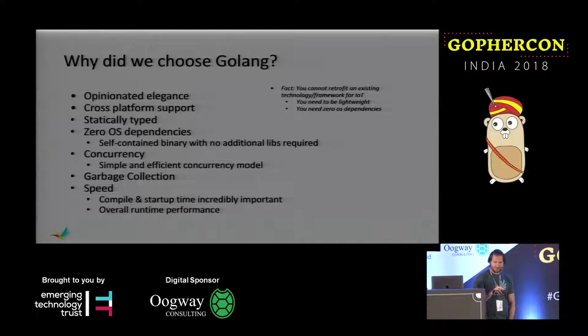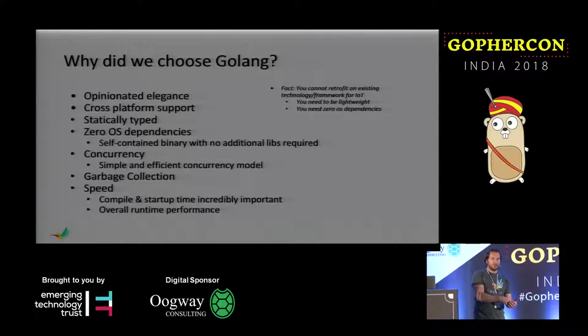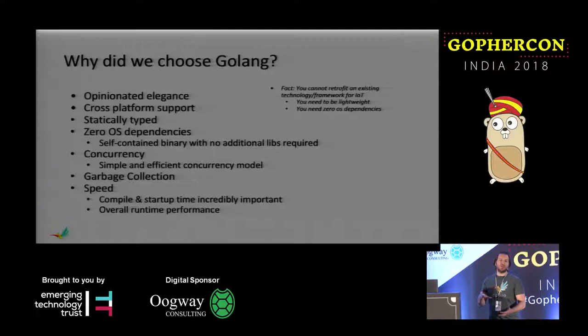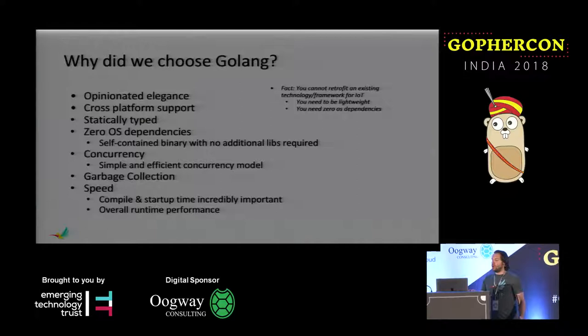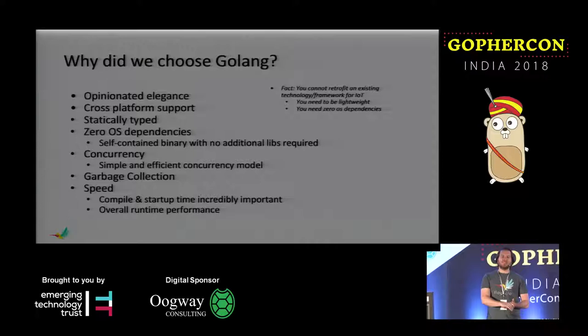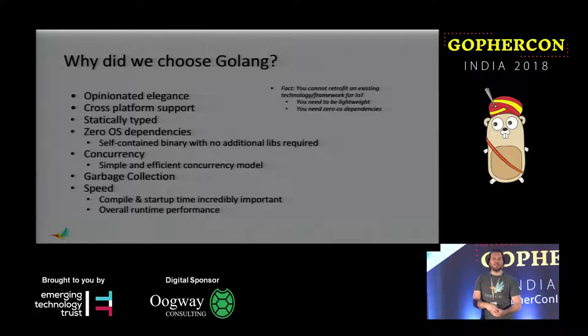When you look at the IoT landscape, if you take Java, you start with the JRE at about 180 megabytes, then add any additional app dev frameworks layered on top. Before you know it, you've got several hundred megabytes of just dependencies before you even get to your application. We chose Go because there are no OS dependencies, so you've got a binary size of maybe 10–15 megabytes depending on what you put in the application. Concurrency — the simple and efficient concurrency model — is quite important, as well as garbage collection and speed, not just execution speed but also compile-time speed.